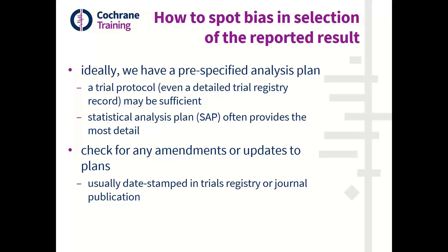Probably the most useful would be to get access to the full statistical analysis plan for a trial, which has become more available in recent years for clinical trials. When looking at pre-specified plans, it's helpful to check if there are any amendments or updates. For example, when I first looked at a registry record on clinicaltrials.gov, I noticed it was not the first version — there was a history page showing each iteration of the registration record. So having access to the first and early versions is ideal, and seeing whether information about measurements or analyses has changed over time. Most of this information is usually date-stamped, so you can figure out if it is truly pre-specified.